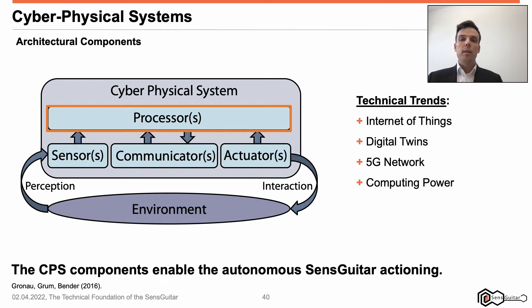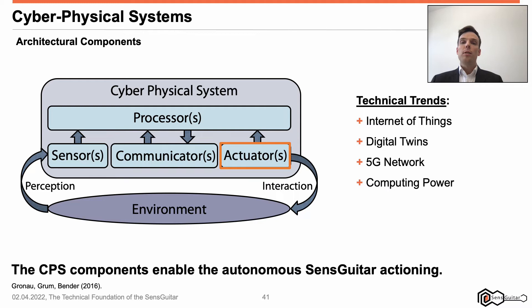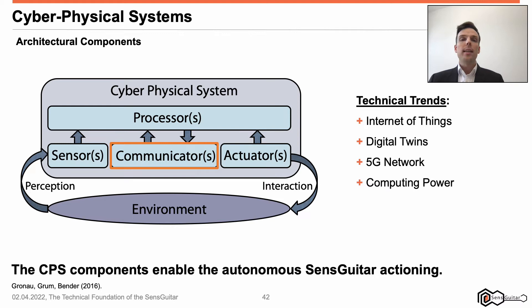Second, processors. The cyber-physical system processes information perceived via sensors and provides intelligence. Third, actuators. By different kinds of actuators, the cyber-physical system intends to manipulate its environment. For instance, the sense guitar provides feedback to the musician. Since the actuator-environment-sensor-processor cycle refers to a closed cycle that manifests over time, the cyber-physical system is enabled to interact with and manipulate its environment. Fourth, communicators. By communicators, the cyber-physical system is enabled to realize dialogues and exchange information with any kind of further entities — for instance, further cyber-physical system communication partners, band colleagues, teachers and producers.